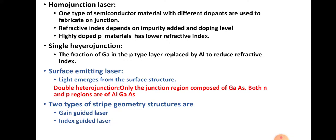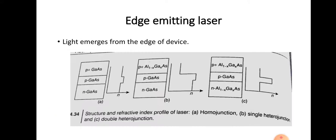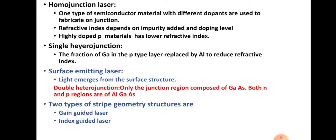The next case is surface emitting lasers. In surface emitting lasers, the light is emitted from the surface of the structure, and it is implemented using double hetero junctions. Here, only the junction region is composed of gallium arsenide and both the N and P regions are of aluminum gallium arsenide. Surface emitters may be implemented using double hetero junctions where one region is made up of gallium arsenide and two regions are made up of aluminum gallium arsenide.